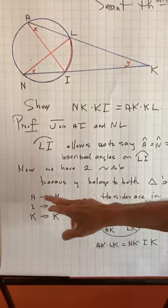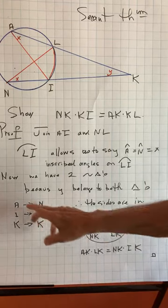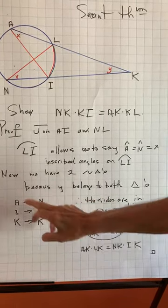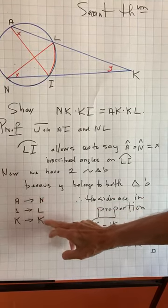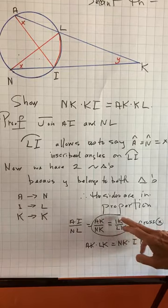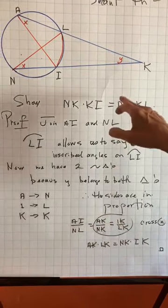These letters all correspond, so we can say that AI is to NL, and AK is to NK, and IK is to LK. If you look at them and cross-multiply these two, I will get exactly this.